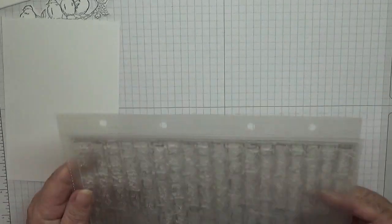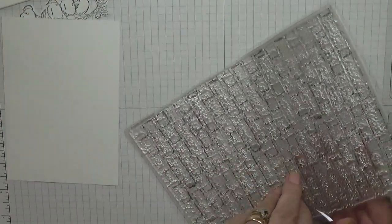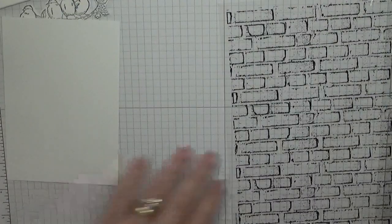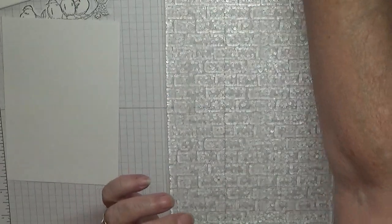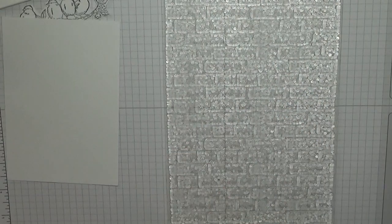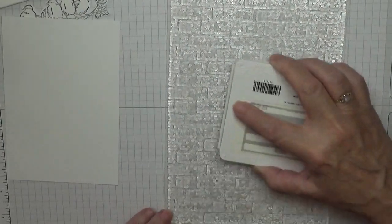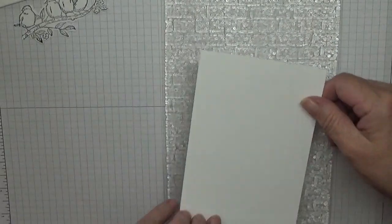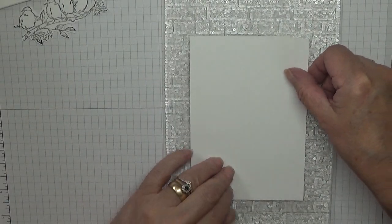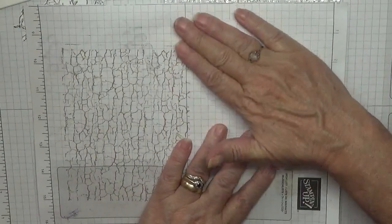All we're going to stamp today is the brick wall and the birthday, and we'll color the birds in. I'm using my brick stamp. Stampin' Up have brought out a stacking brick stamp, but as I've got this I'm not going to get it. With this big stamp I lay it flat and ink it up with my smoky slate.